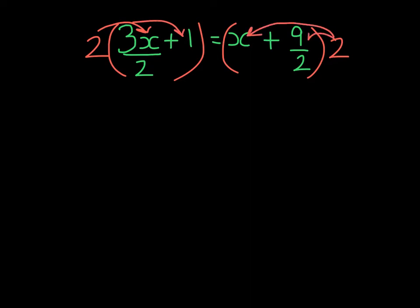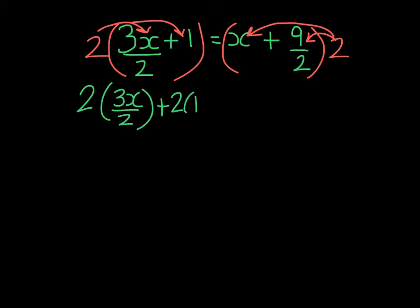So I'll write this step out. We're going to multiply 2 times 3x over 2 and 2 times 1 — that's on the left-hand side. And on the right-hand side, 2 times x and 2 times 9 halves.